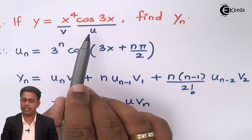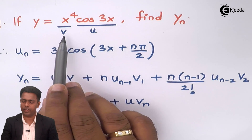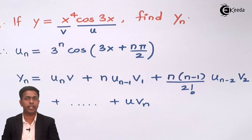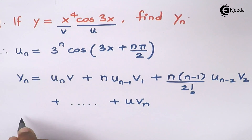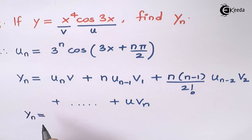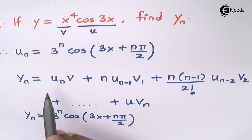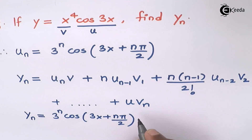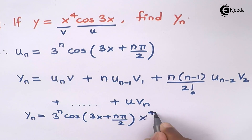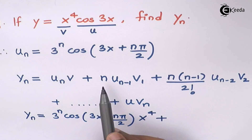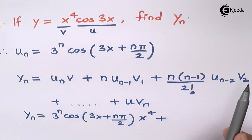Since our function has v = x⁴ and u = cos(3x), let's substitute. The first term is uₙ times v, so I substitute the value of uₙ, and v = x⁴ remains as it is. Next we have the coefficient n — whenever we find the nth derivative we keep n as n.